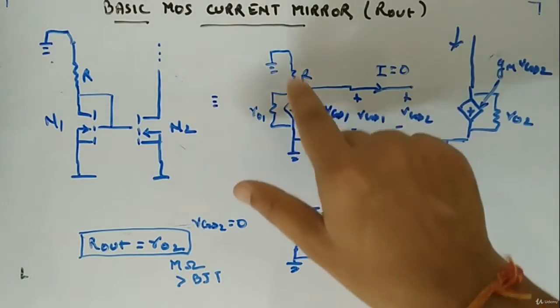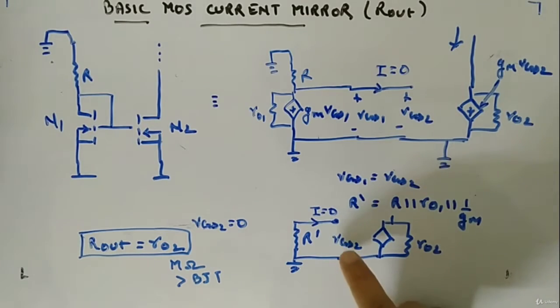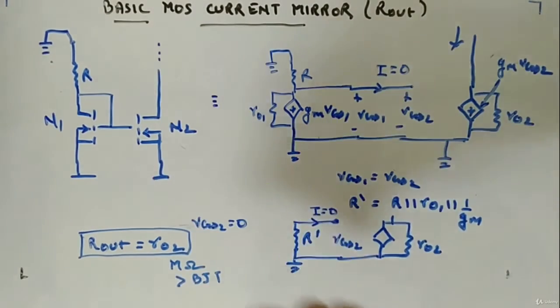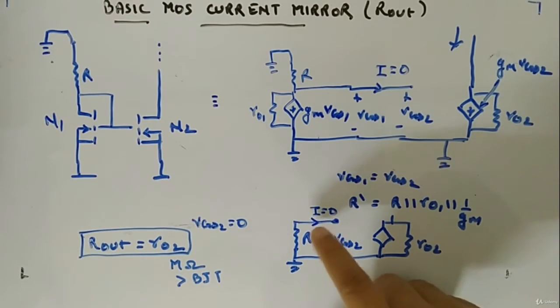All three of them are in parallel: R dash, VGS2, this is GM VGS2 and RO2. From here you have to look RO2. Now since the gate does not draw any current, the current in this branch will be zero, hence VGS2 will be zero.